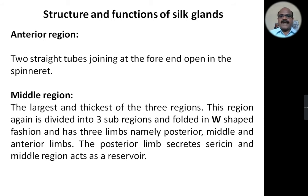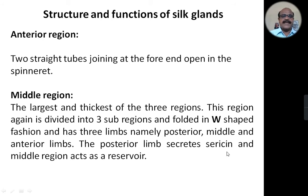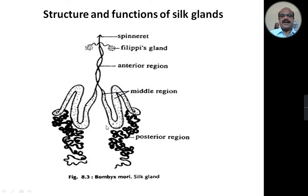The middle region is the largest and thickest of the three regions, and this region is again divided into three sub-regions and folded in a W-shaped fashion, and has three limbs, namely posterior limb, middle limb, and anterior limb. The posterior limb secretes and the middle region acts as a reservoir. Here you can observe this is the middle region of the silk gland, which is folded in a W-shaped fashion, and these lobes are again folded into three limbs: anterior, middle, and posterior.